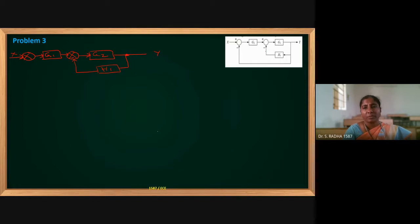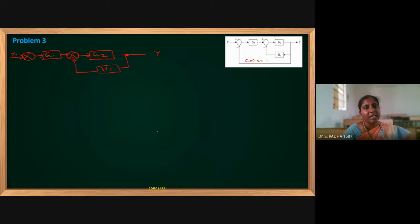There is one more unity feedback. If no gain or block is present, this is called unity feedback, which means gain equal to 1. If a simple line is there, gain equal to 1. G1, G2, H1 are gains. If no such block is there, gain equal to 1, which is also called unity feedback. Because it is in the backward direction, it is called the feedback path — unity feedback.